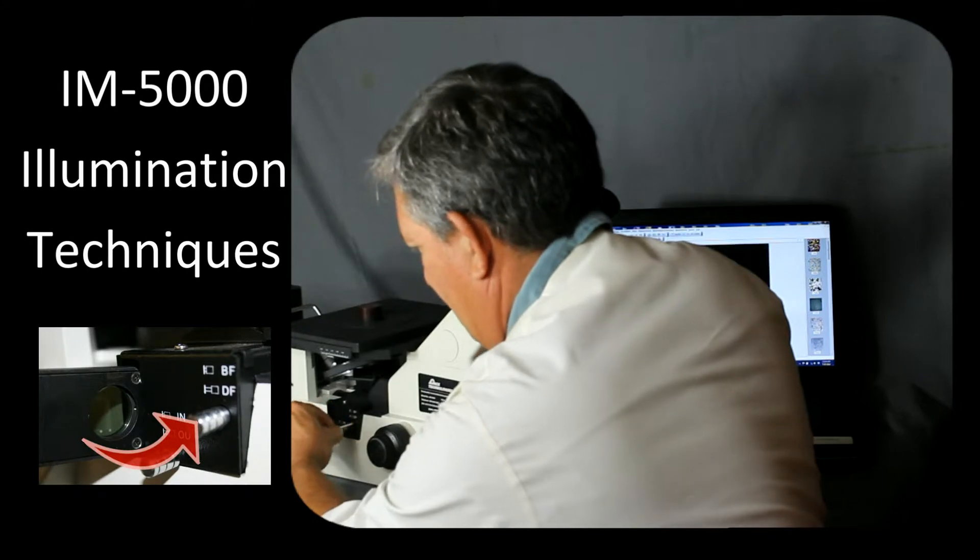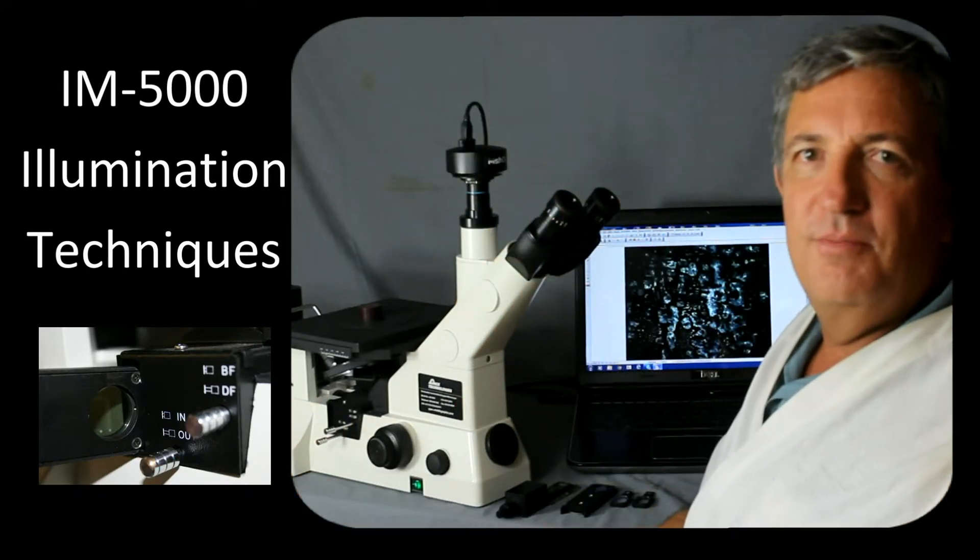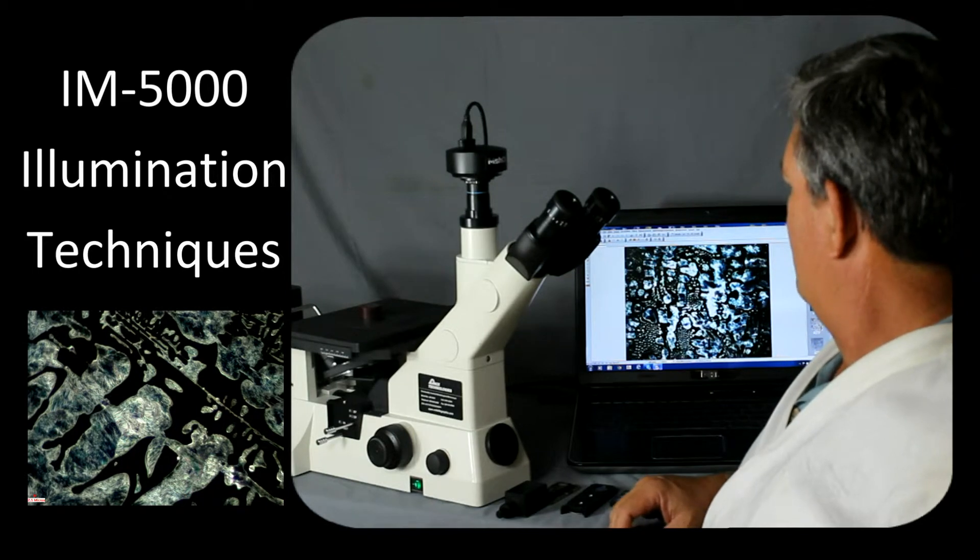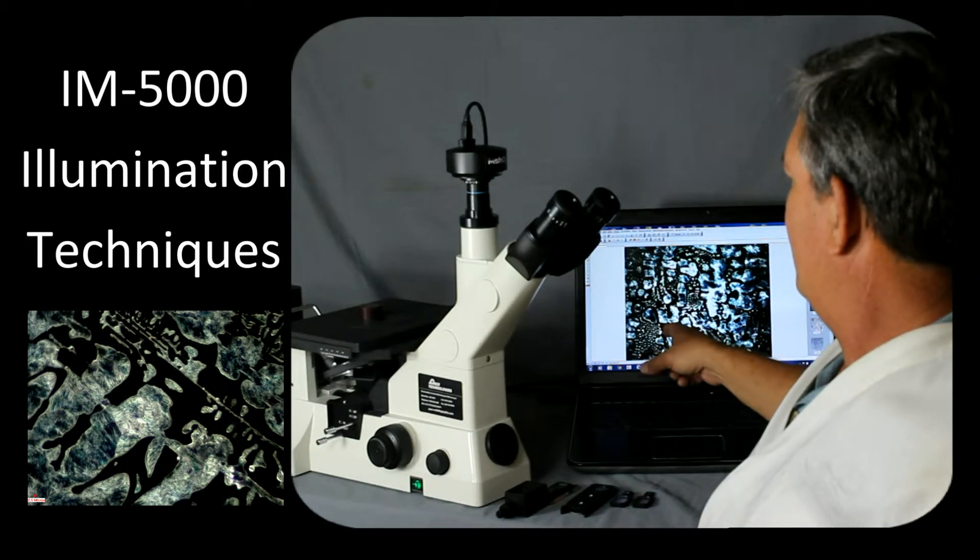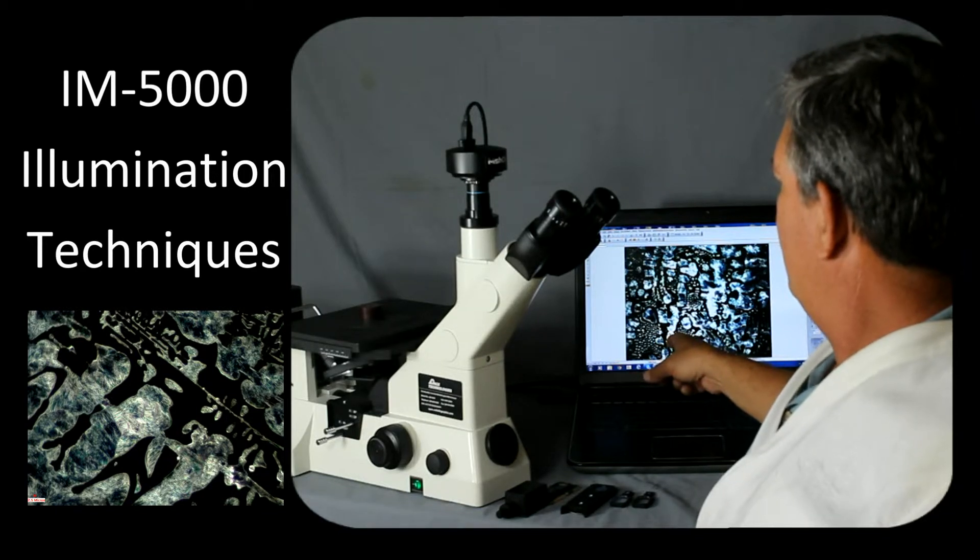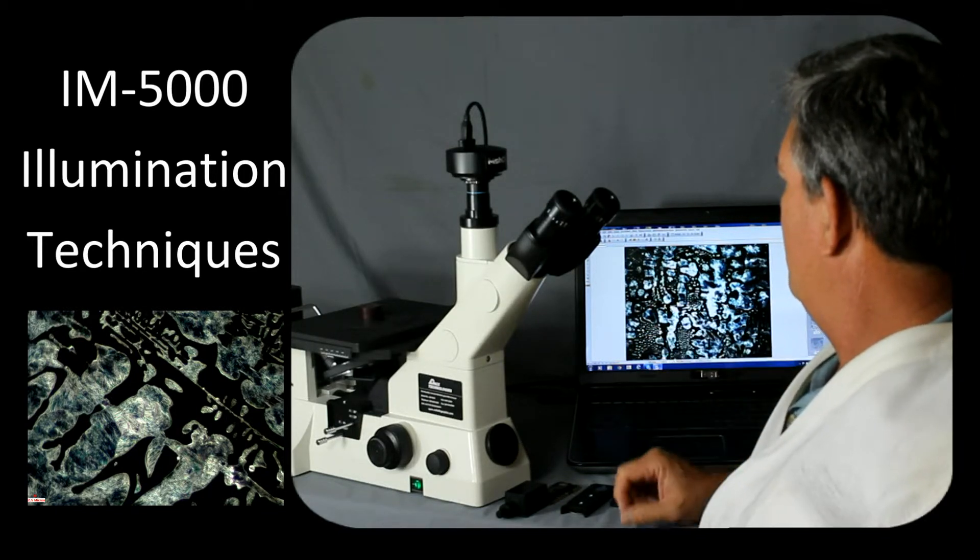By pulling out this lever here on the microscope, now we get to dark field illumination. And in this case what we've done is we've changed the optical path so that the background is going to be dark and the features are going to be bright.